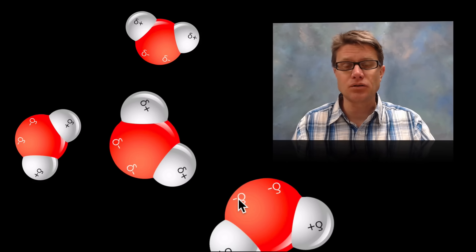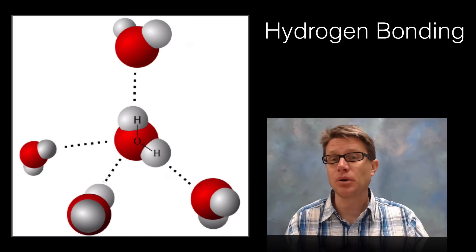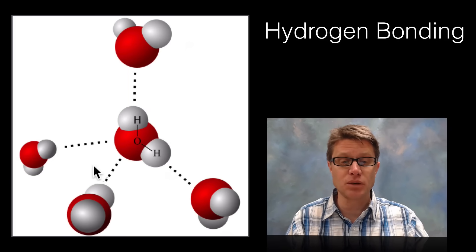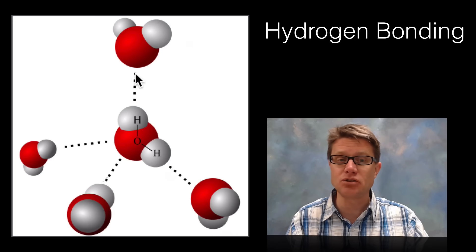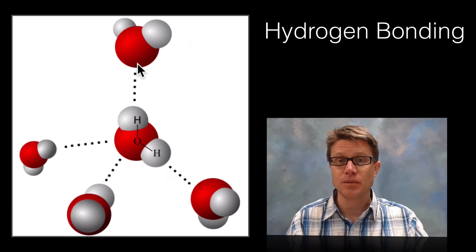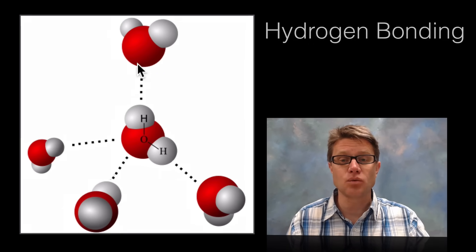What do we call that attraction between these? We call those simple hydrogen bonds. The hydrogen bond would be represented with these dotted lines. It's an attraction between the positive hydrogen and the negative oxygen. Sometimes we'll see hydrogen bonding with nitrogen as well.